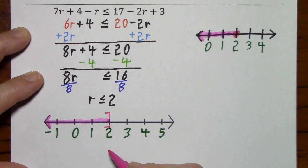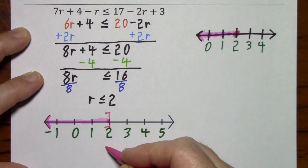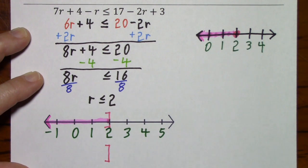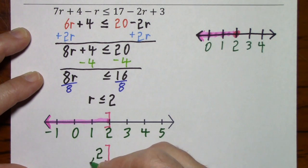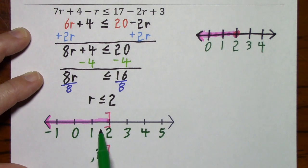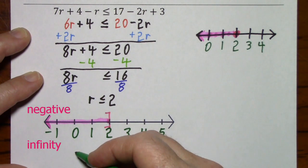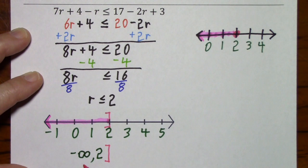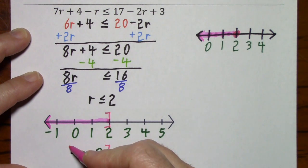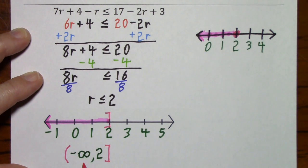For interval notation, I like to graph it before writing the interval notation, because I'll use a bracket opening in the same direction as the graph. I put in a 2, comma, and then we want values out towards negative infinity. You can never touch infinity, so we always use parentheses next to the infinity symbol. What helps me remember this is that the infinity symbol is curved, just like the parentheses.